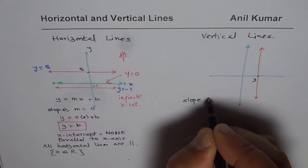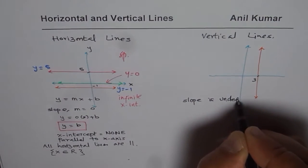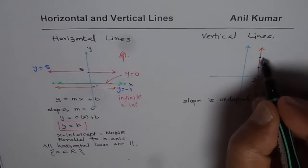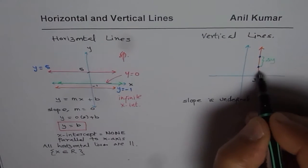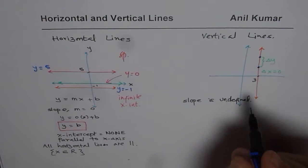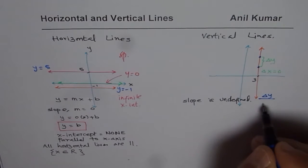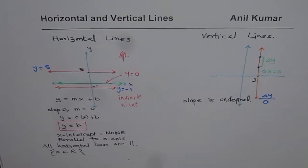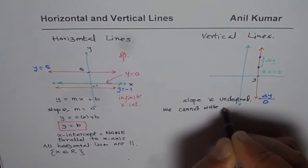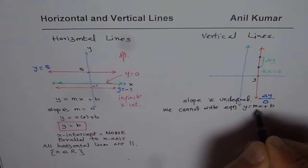What you notice is that slope is undefined. The reason is that if you take any two points on the line, the run is 0 — change in x is 0, delta x is 0 — so slope is undefined since we have some value of rise but run is 0, meaning we divide by 0. Therefore, slope is undefined, and since slope is undefined, we cannot write the equation y equals to mx plus b, since m is not defined.